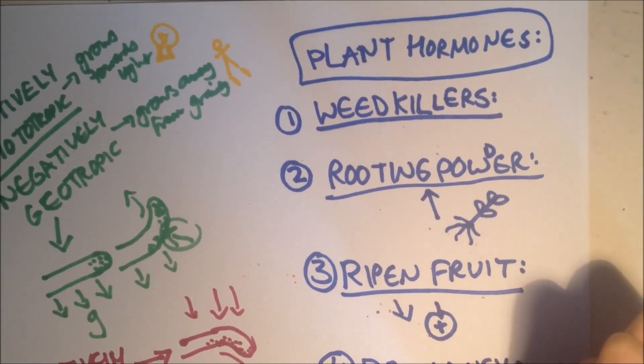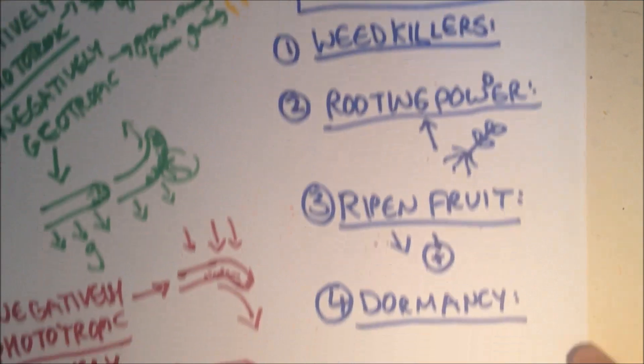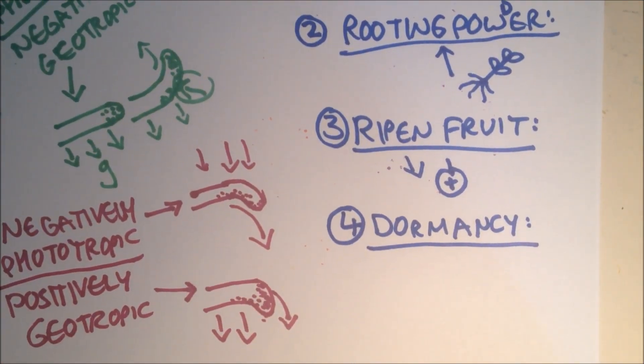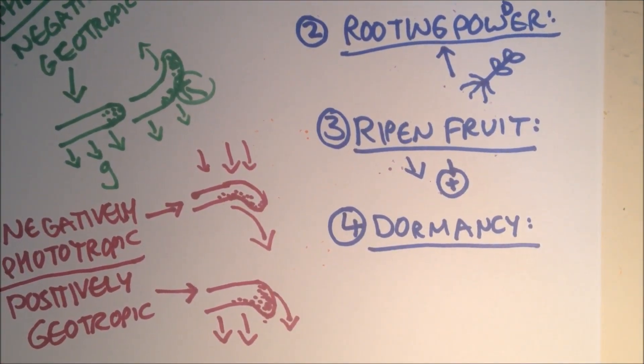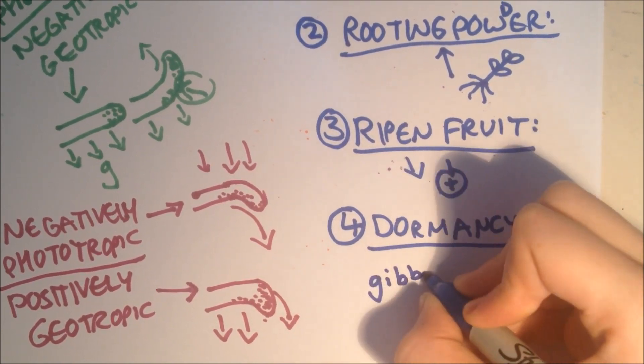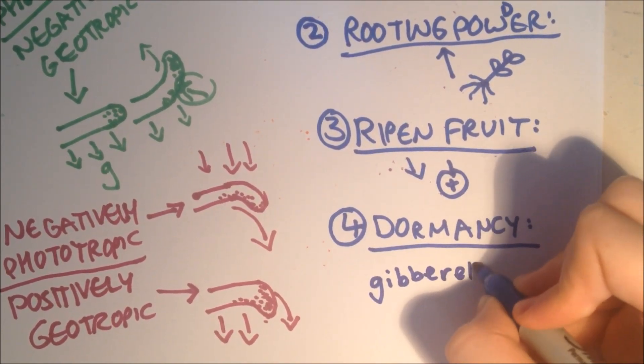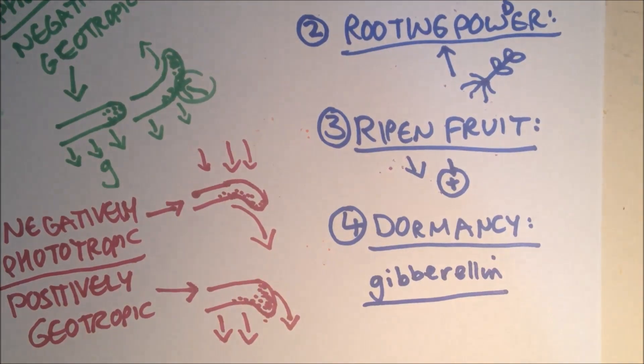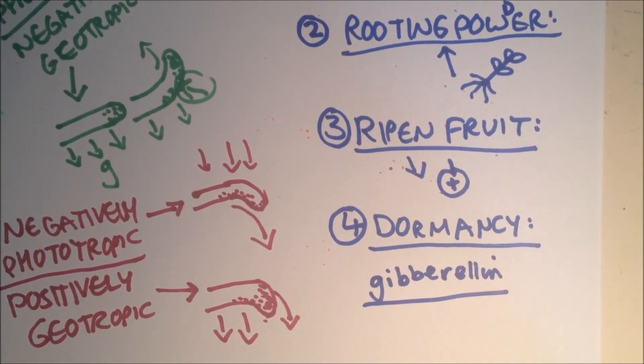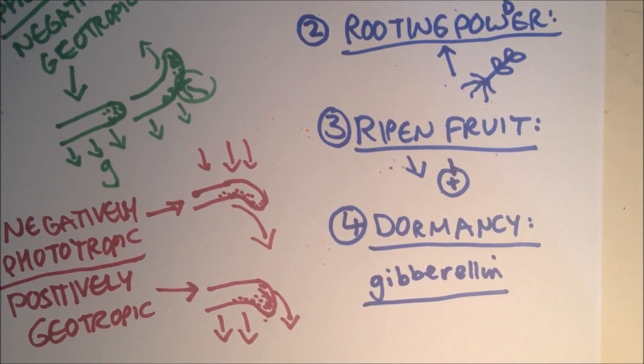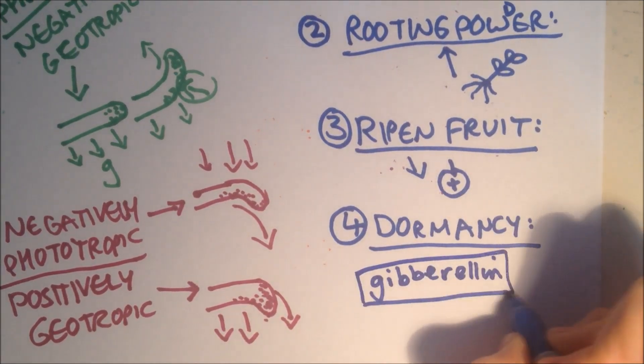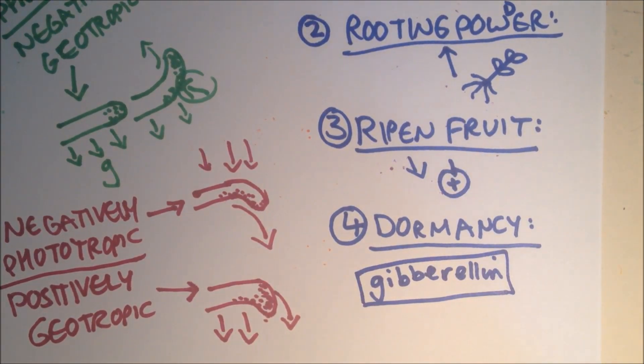The final reason is controlling dormancy. Lots of seeds won't start growing until they've been through certain conditions, which is called dormancy. A hormone called gibberellin breaks the dormancy and allows the seeds to germinate, start growing. Commercial growers can treat seeds with this hormone and germinate at times of the year when they normally wouldn't.